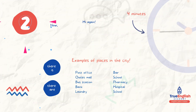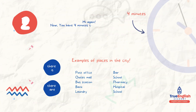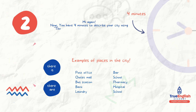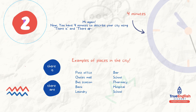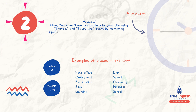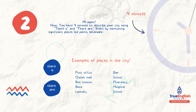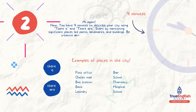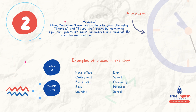Hi again! Now, you have 4 minutes to describe your city using there is and there are. Start by mentioning significant places like parks, landmarks, and buildings. Be creative and vivid in your description. Ready, set, write!